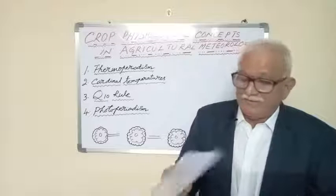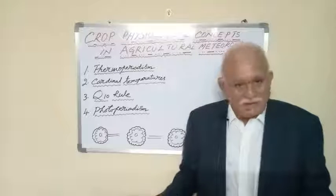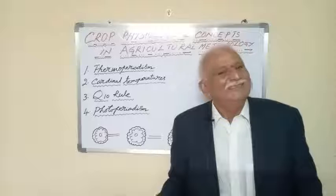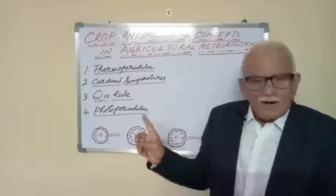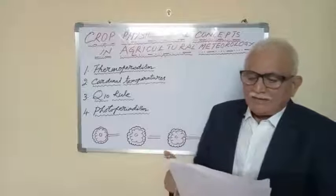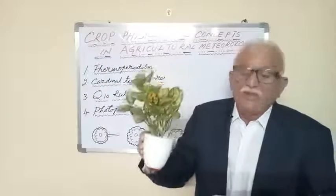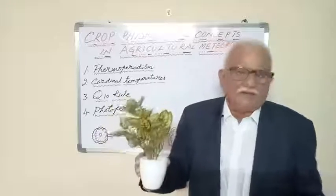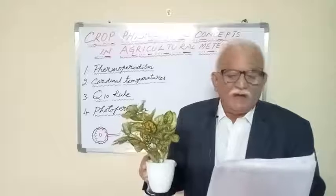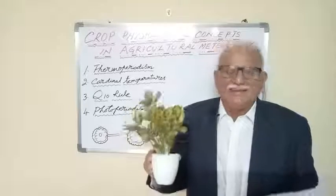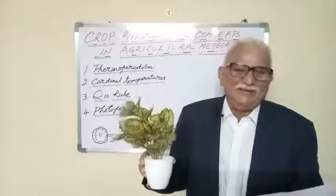Now we go to Van't Hoff's law, also called the Q10 rule. Van't Hoff was a wonderful scientist whose rule agrometeorologists, crop physiologists, physicists, and chemists all apply. What Van't Hoff said is that the rate of response of a process in a crop plant — such as photosynthesis, dry matter production, respiration, or enzymatic reactions — is often doubled or more for each increase of 10 degrees centigrade, within certain limits.